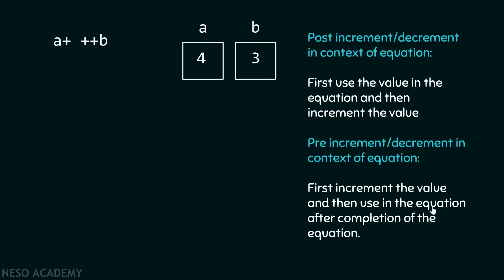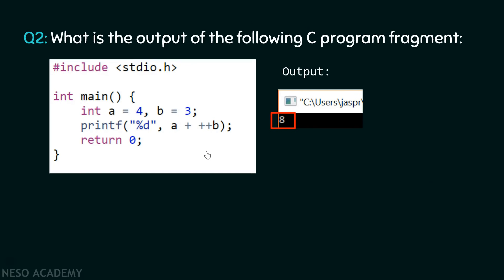First, we put the value of a in the equation, which is 4. Then there is a binary operator. Then we have '++b', a pre-increment operator, so we increment b first from 3 to 4, and then use that incremented value in the equation after completion. The equation becomes 4 plus 4, which equals 8. The output of this program is 8. Using the same number of operators as in question one, but with proper spacing, we get a different output.